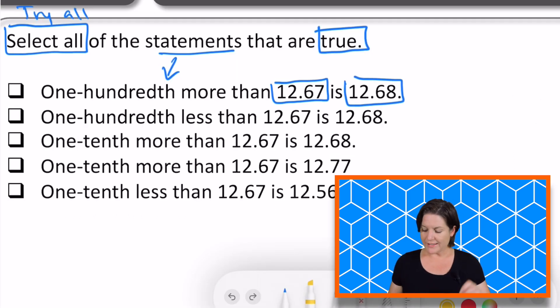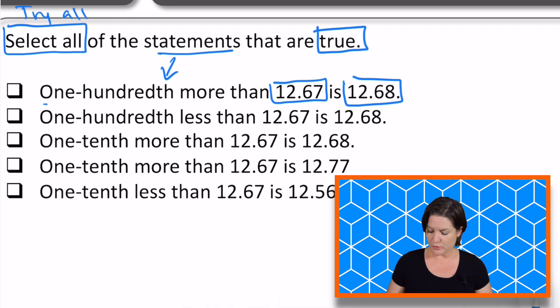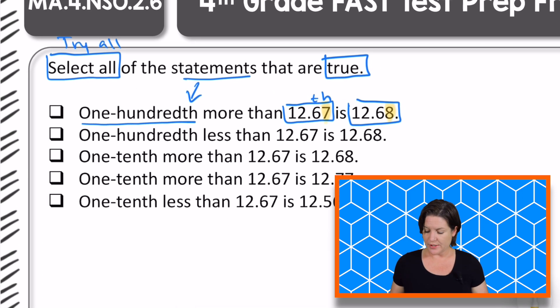We have 12 and 67 hundredths. This one says one-hundredth more. So which digit is in the hundredths place? The seven. If we need that seven to be one hundredth more, that seven is now going to become eight. And that is what we have over here. We do have an eight in the hundredths place. So should we keep this one or eliminate it? Let's keep it. Go ahead and put a question mark there.